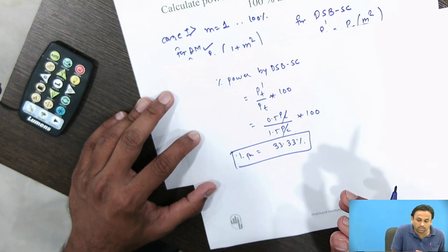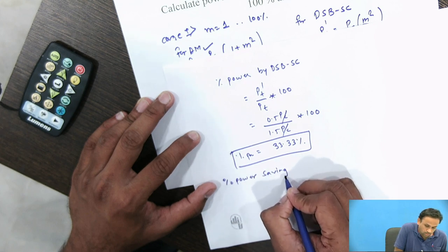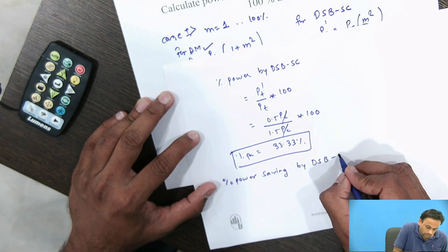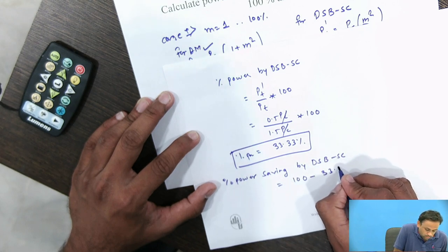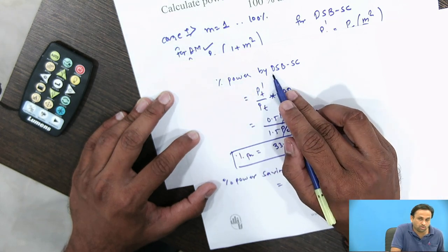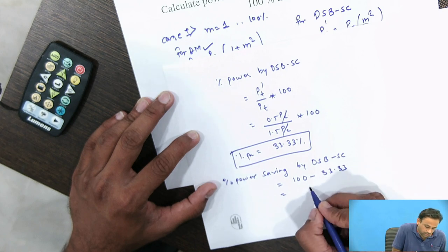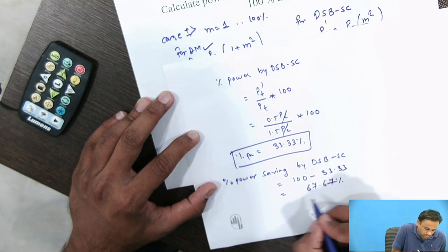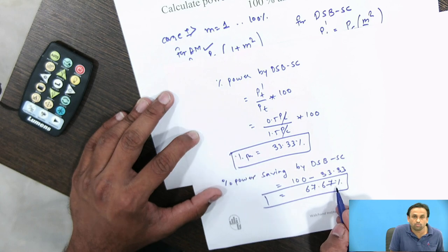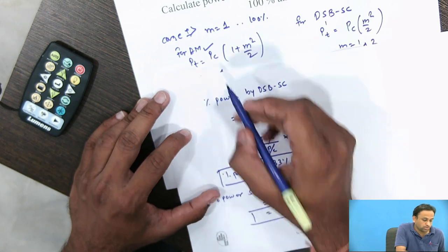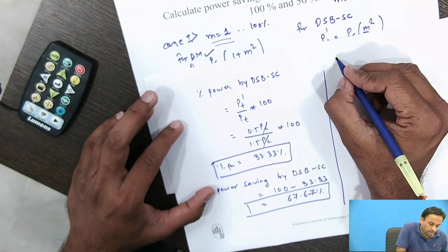The power saving by DSB-SC is 100% minus the percentage power used, which is 100 − 33.33 = 66.67%. So the power saving by DSB-SC for m = 1 is 66.67%.